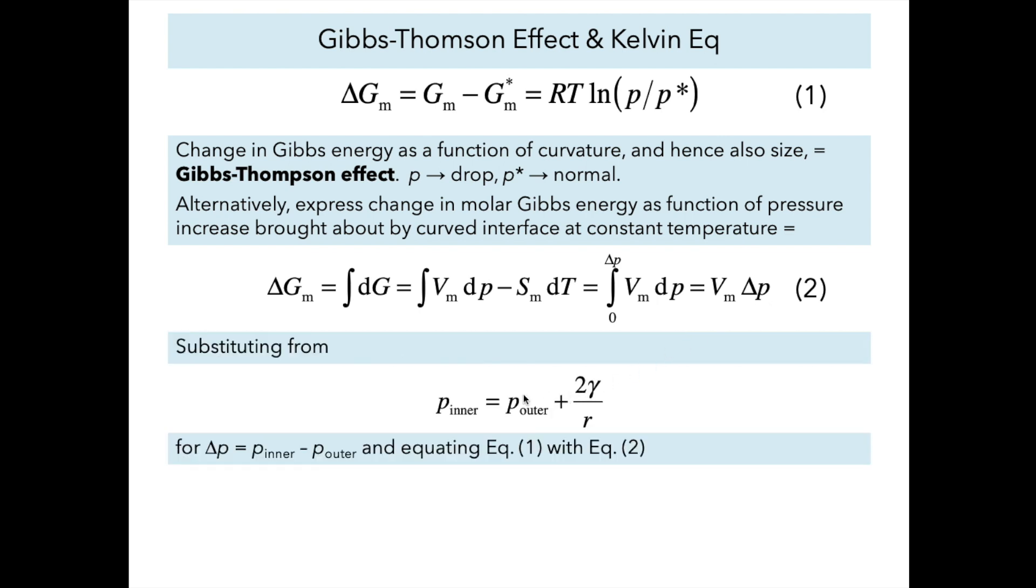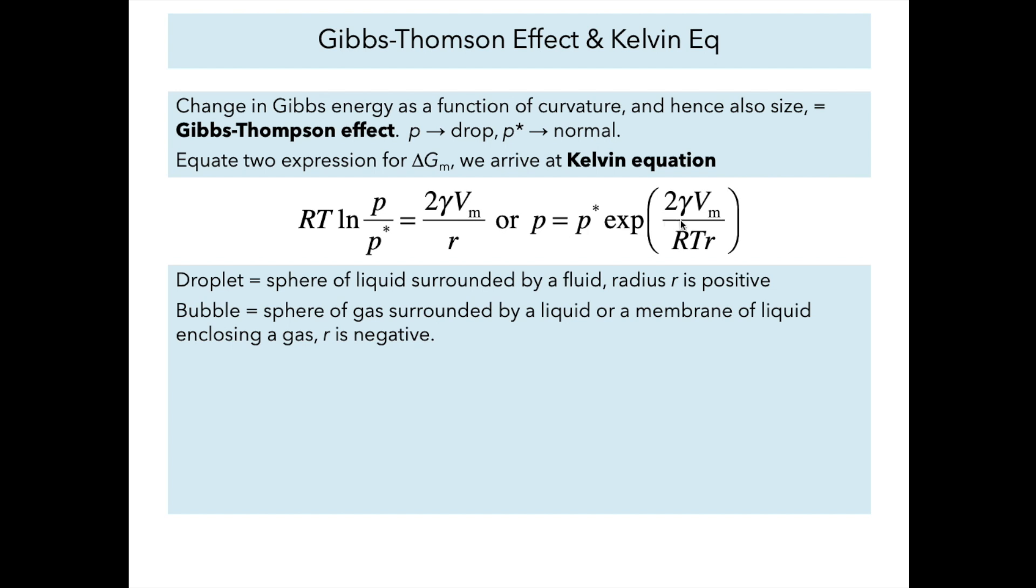Delta p, we know what that is. We have already developed an equation for how the inner pressure is different from the outer pressure based on the size of our drop. Δp is just the inner pressure minus the outer pressure, equal to 2γ/r. We'll equate the right-hand sides of these two equations and substitute for Δp from the relationship between p inner, p outer, the surface tension and r, and that will allow us to derive the Kelvin equation.